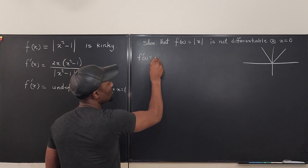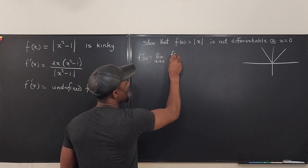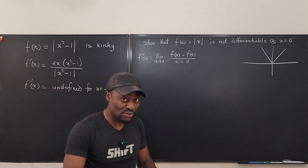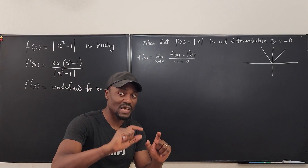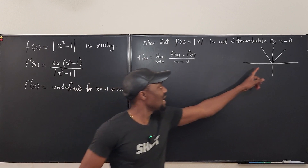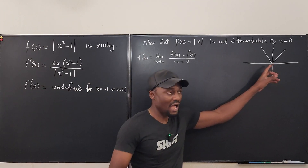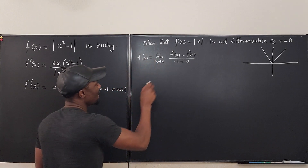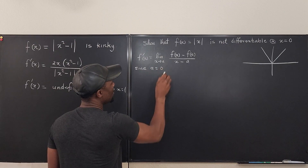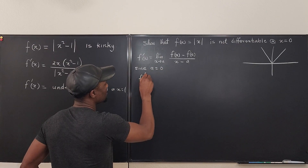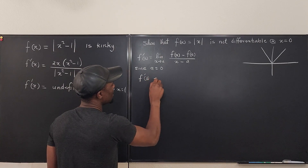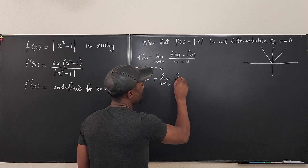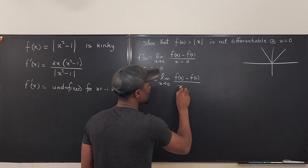By definition, f′(a) = lim[x→a] (f(x) − f(a)) / (x − a). Since a = 0 here, f′(0) = lim[x→0] (f(x) − f(0)) / (x − 0). There are two definitions for the derivative — one at a specific point and the universal h→0 form — but here we use the point-specific definition.